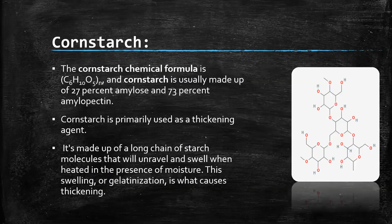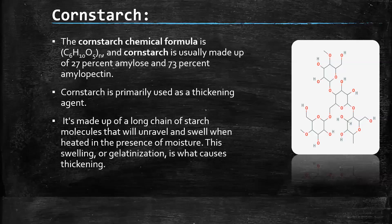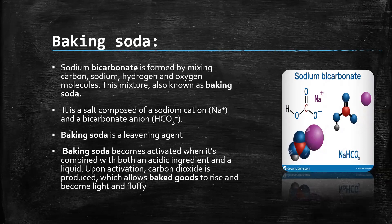The first ingredient is cornstarch. The chemical formula of cornstarch is C₆H₁₀O₅, and cornstarch is usually made of 27% amylose and 73% amylopectin. Cornstarch is primarily used as a cooking agent. It is made of long chains of starch molecules that unravel and swell when heated in the presence of moisture. This swelling is called gelatinization.